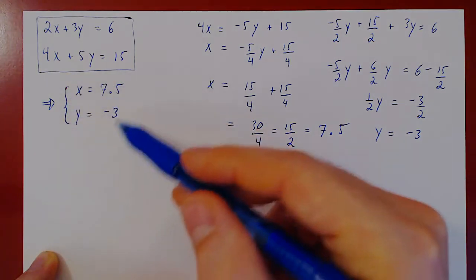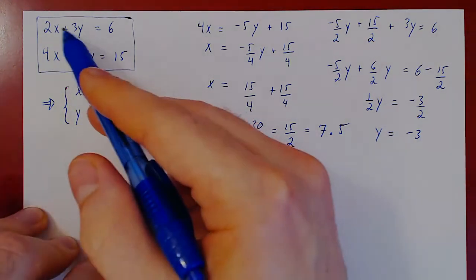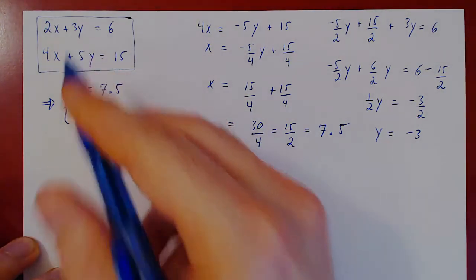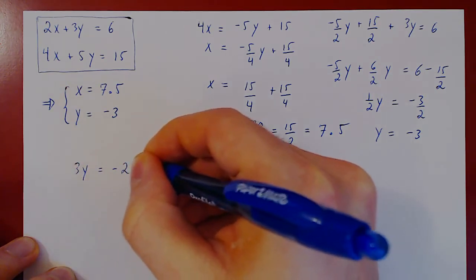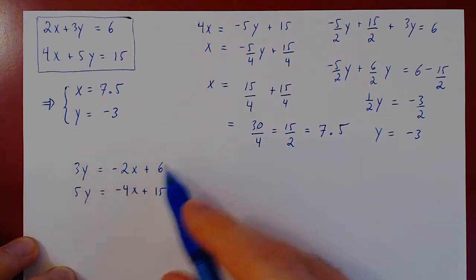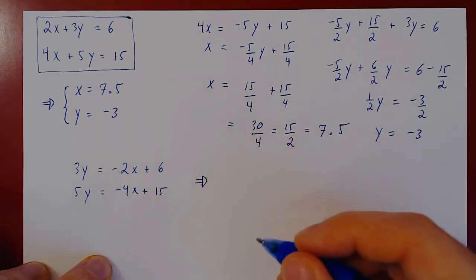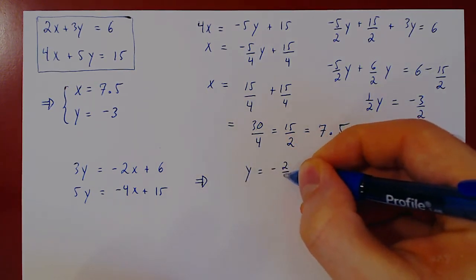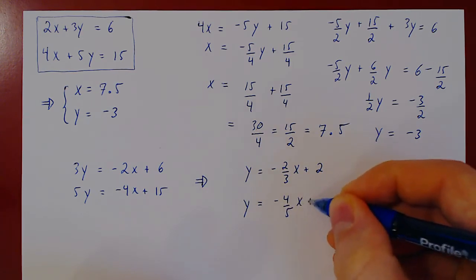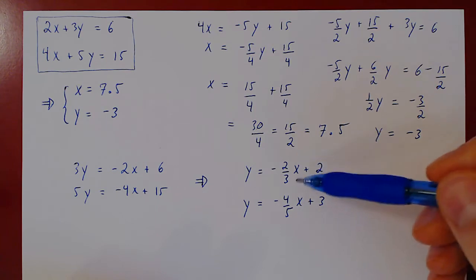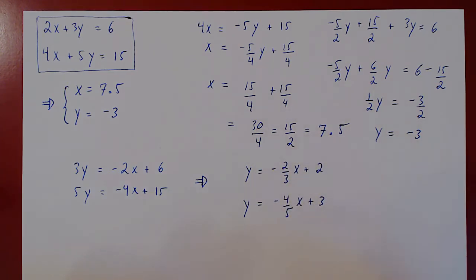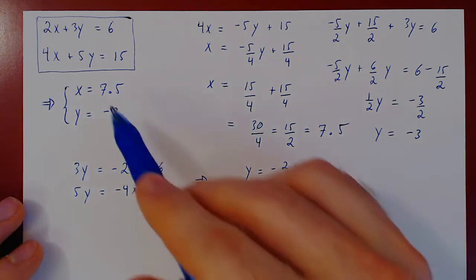Now let's see the geometric interpretation. As before, we isolate y as a function of x in both equations. The first equation becomes y equals negative 2 thirds x plus 2. The second equation becomes y equals negative 4 over 5 times x plus 3. Both equations are equations of lines in the xy plane — y equals mx plus b form.